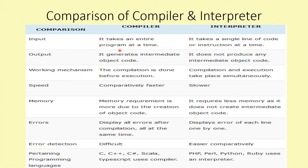The compiler takes the entire program at one time — it takes the entire program and executes the whole thing. In contrast, the interpreter takes a single line of code, one instruction at a time. The next difference is that the compiler generates an intermediate object code, but the interpreter does not produce any intermediate object code.